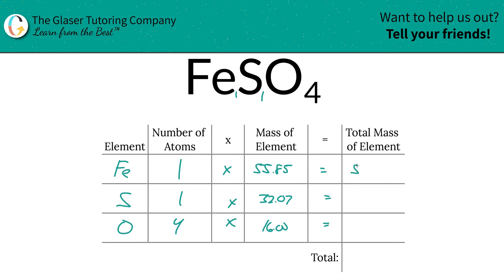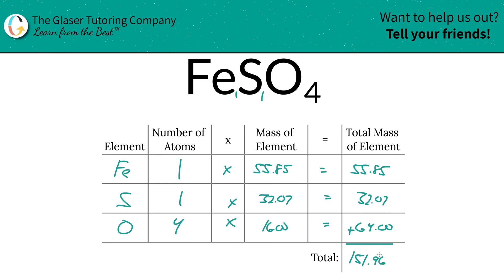The total mass of iron is going to be 55.85. The total mass of sulfur is going to be 32.07, and then the total mass of oxygen is going to be 64. Last but not least, just add this column together to find the total mass of the entire compound. When we add that together we get 151.92. There's the total mass — that's the first step of finding the percent compositions of each of these elements.